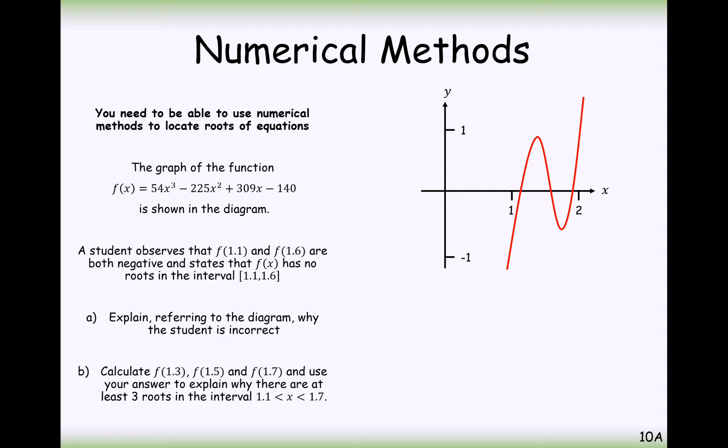The next part of the question asks us to calculate f of 1.3, 1.5, and 1.7, and use it to explain our answers that there are at least three roots in between 1.1 to 1.7. So here we go. We've got f of 1.1, f of 1.3, f of 1.5, f of 1.7. We have a change in sign here, so that's one root. We have a change in sign here, that's one more root. And then we have a change of sign in between here and here, so that is another root. So we have three places in which we have a change of sign, so therefore we have three intervals.